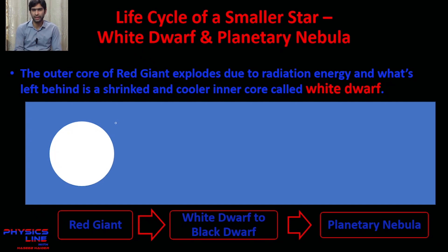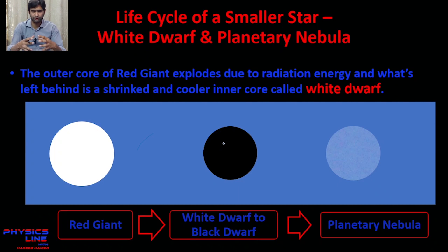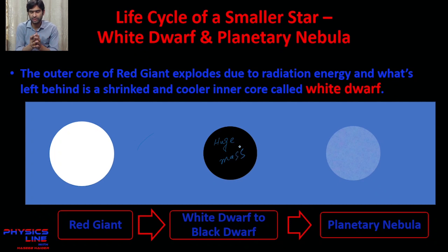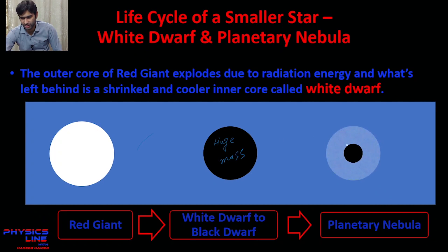When the outer core explodes, we are left with the inner core, which is white-hot — it is white because it still has residual energy being emitted as visible light. This is the white dwarf. After emitting all of its residual energy, the white dwarf gets converted into a black dwarf, which has huge mass and very high density because the dust particles have been compressed so closely together.